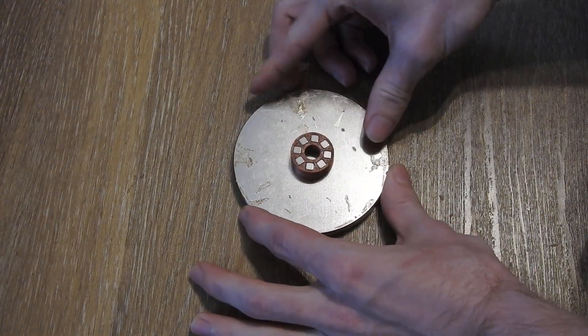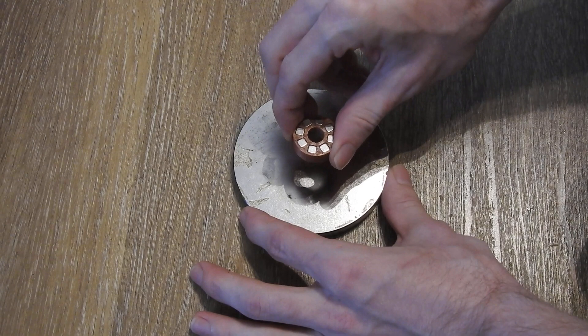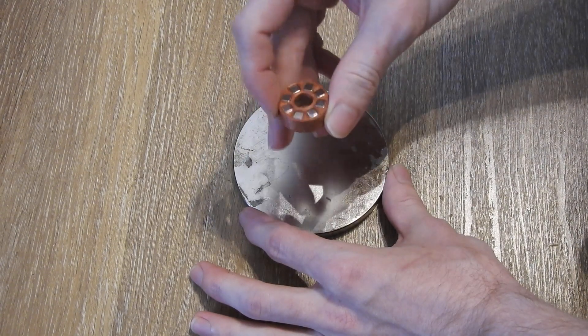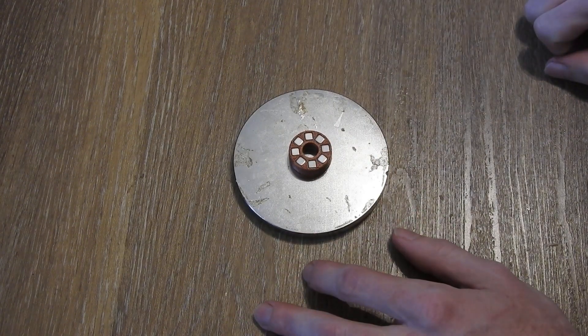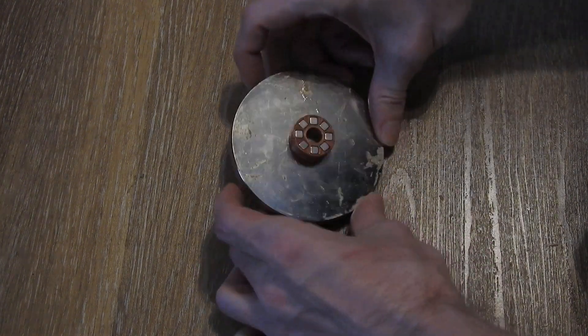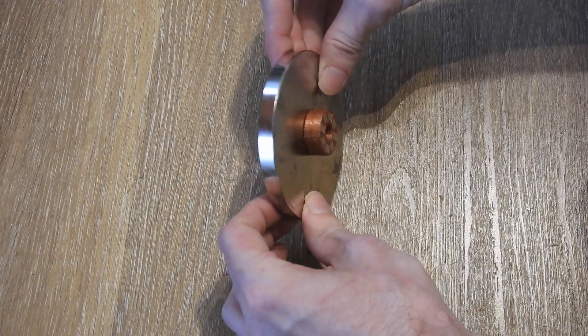And now I will take the array, flip it over to the other pole, place it on here. And you will see it is also attracted. It does not fall off.